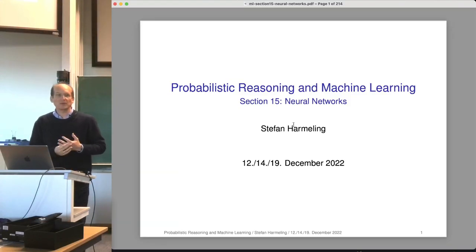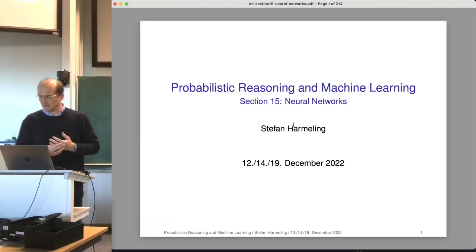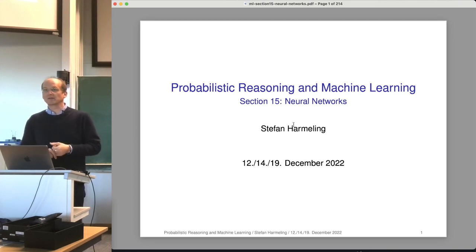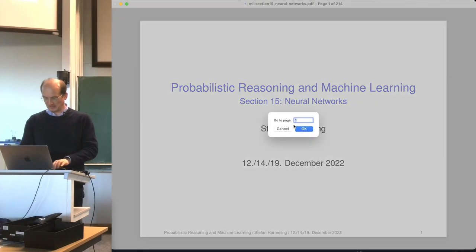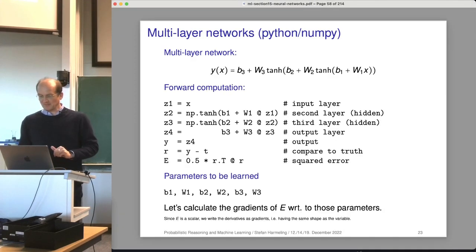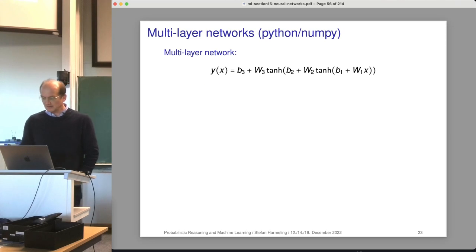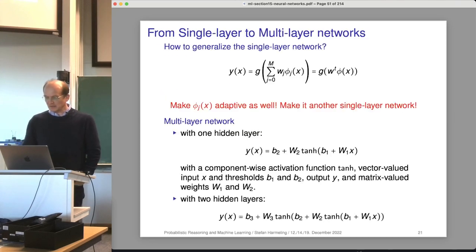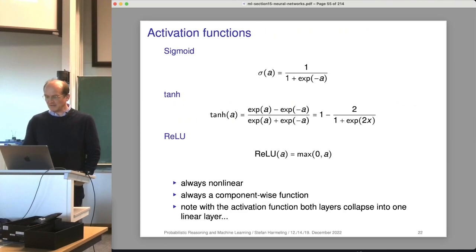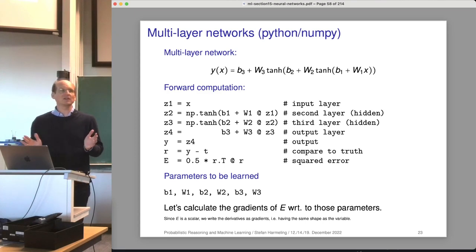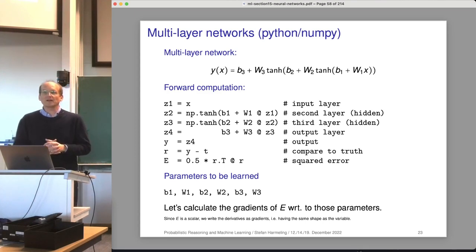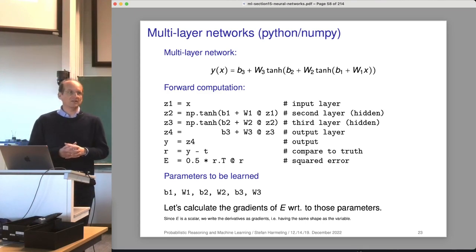Welcome everyone to our next lecture on probabilistic reasoning and machine learning. We continue with neural networks, also known as deep learning. We jump right to where we were last time. I think we talked about different activation functions and then came the example, but I didn't calculate the derivatives yet.